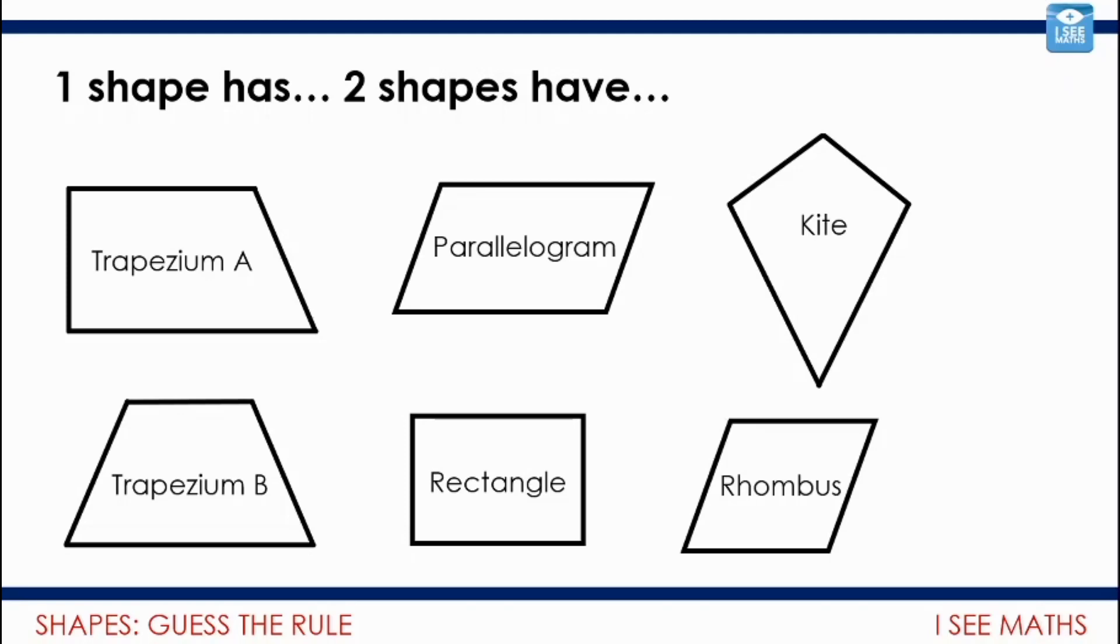The game we're going to play is one shape has, two shapes have and we'll keep going. So I want you to look at these shapes and think, can you think of a statement which says one shape has and something that applies to only one shape and then two shapes have what have two of those shapes got in common? Three shapes have four, five, six. I wonder how many statements you can come up with where you're grouping those shapes in terms of their properties. Pause the video and see how many different solutions you can find.